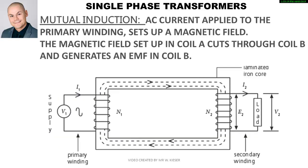The operation of a single phase transformer uses a term called mutual induction, where alternating current applied to the primary winding sets up a magnetic field. The magnetic field set up in coil A cuts through coil B and generates an EMF in coil B.